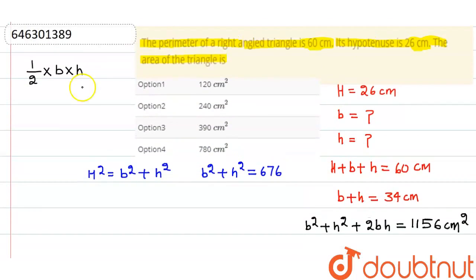So the area will be 1 by 2 bh. That means 1 by 2 into 240. That means 120 cm squared. So our answer will be option first, 120 cm squared. Thank you.